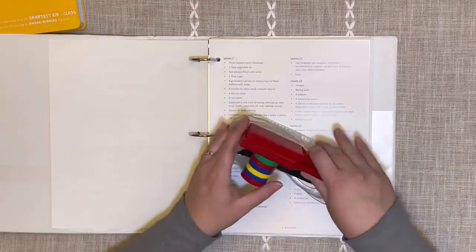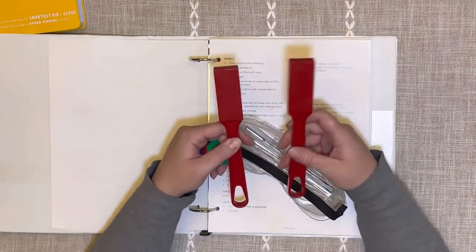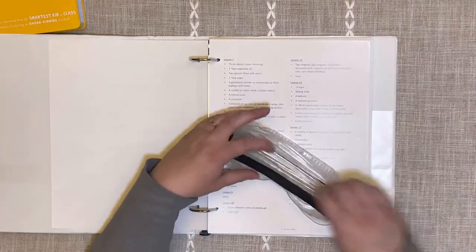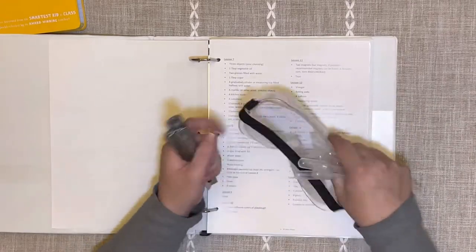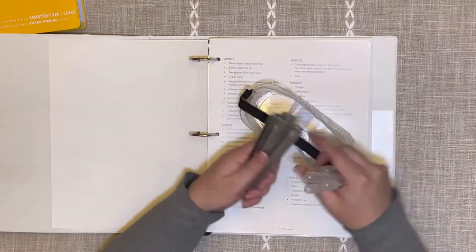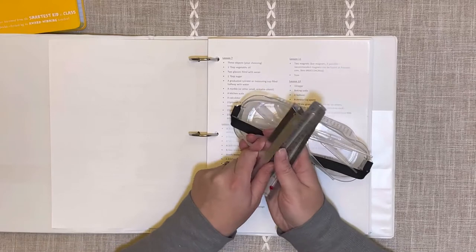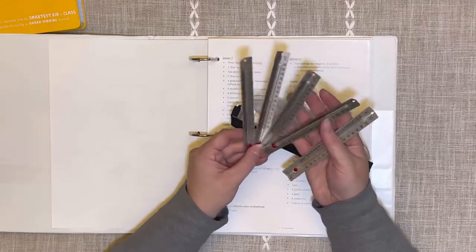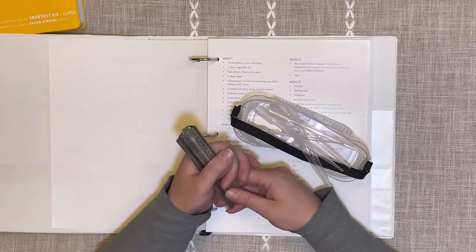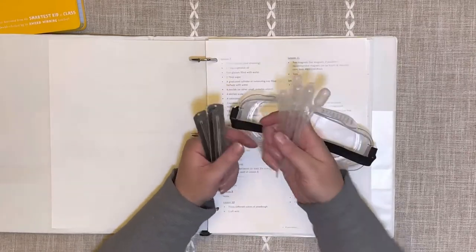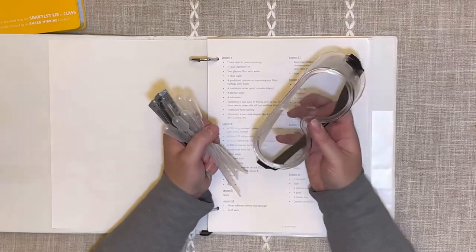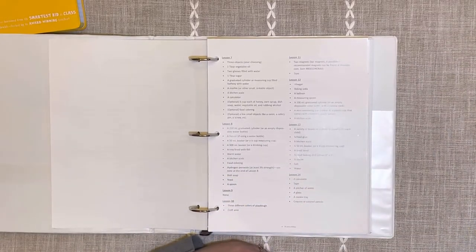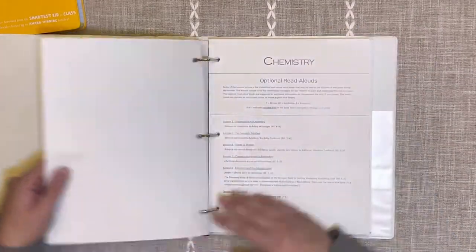It talks about optional graduated cylinders and beakers. I did go ahead and pick up a set of these and I actually got these at Lakeshore. It came with a set of seven of them. I believe it was only like $20 for the seven. I decided to go ahead and pick that up because there were several that said you could use that as an optional resource. I also went ahead and picked up magnets, thermometers, pipettes, and we already had goggles.